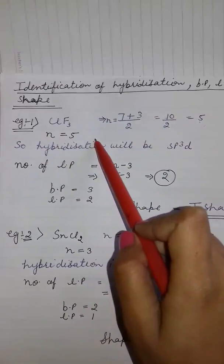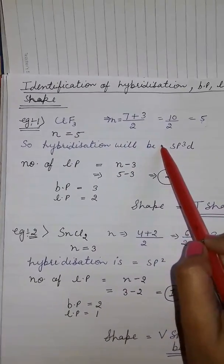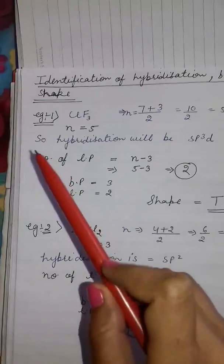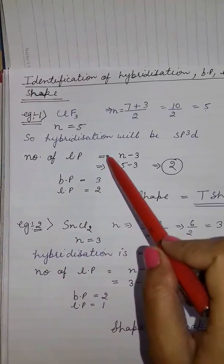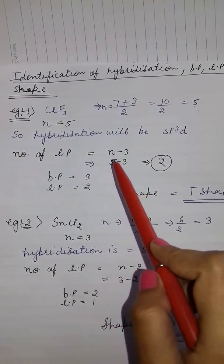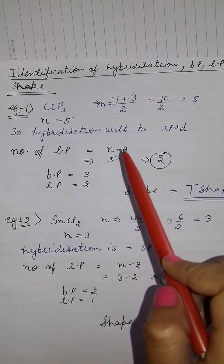So hybridization will be sp3d, as I have already explained. Here I am explaining how to get the number of lone pairs present in a molecule. Here, n minus number of